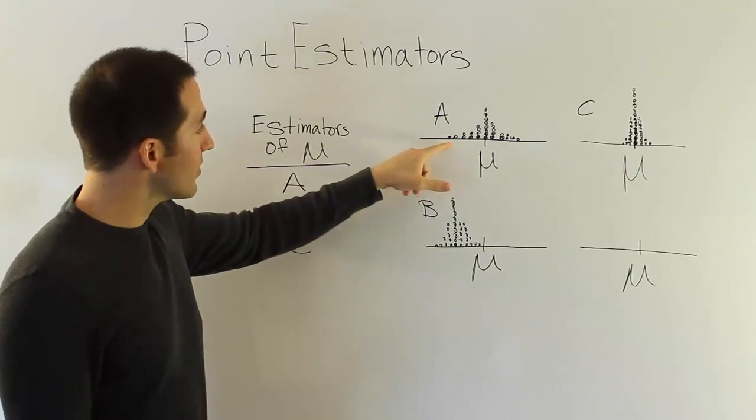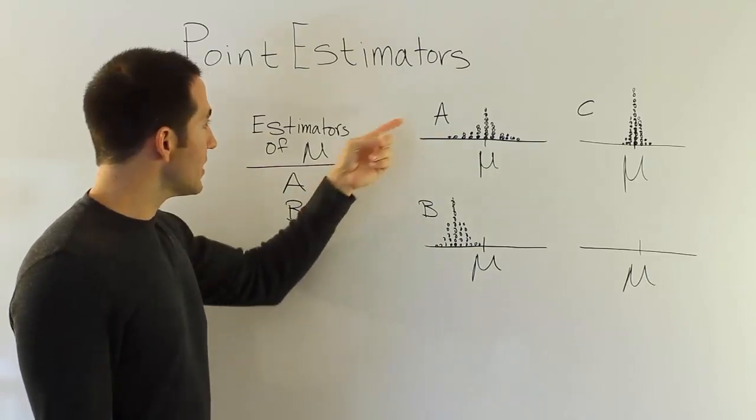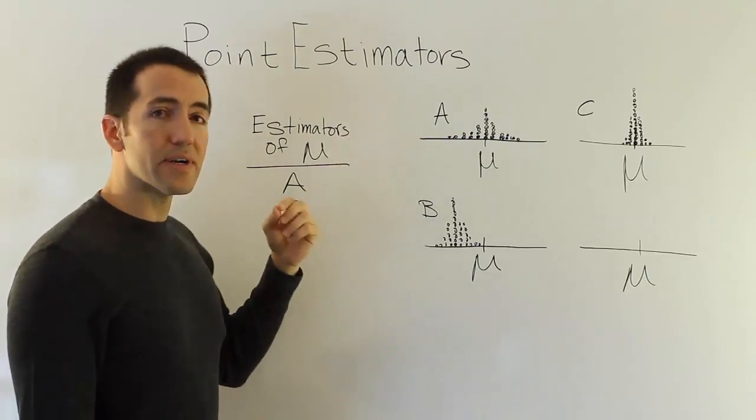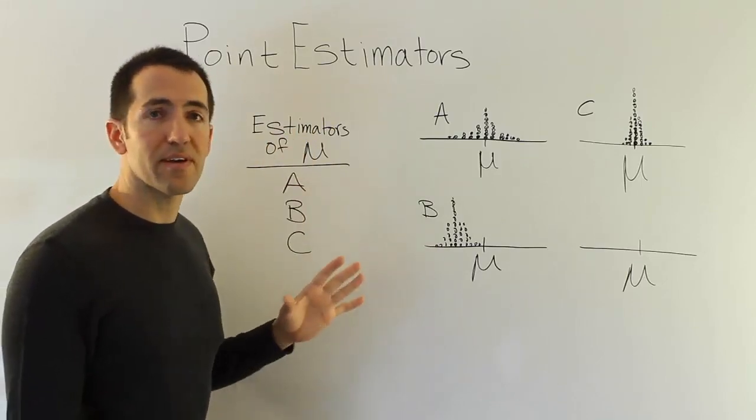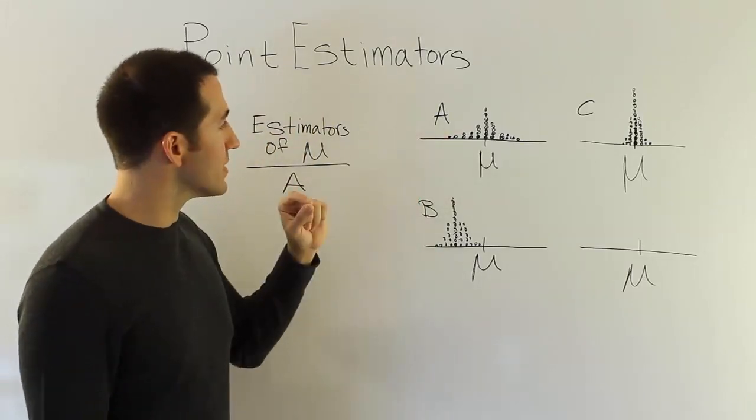What these little dots on the graph are going to represent is a calculation of that estimator for a sample, right? So let's assume they all work with samples of size 50, just for argument's sake. So each one of these dots represents, say, for example, the value of A for a sample of size 50.